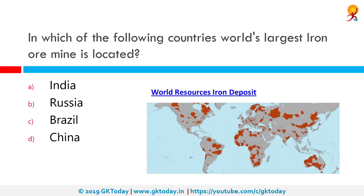In which of the following countries is the world's largest iron ore mine located? The correct answer is Brazil. The Vale-owned Caracas mine in the state of Para in northern Brazil is the world's biggest iron ore mine, holding 7.27 billion tons of proven and probable reserves as of December 2012.